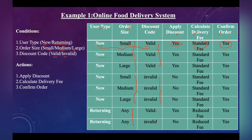If the user is new, order size is small, and the discount code is invalid, then he cannot apply for discount, but he can still get the order confirmed. Similarly, for a new user with large order size and invalid discount code, apply discount is no, standard fee is calculated, and confirm order is yes. For a returning user with valid discount code, he can apply for discount, the fee will be reduced, and the order can be confirmed.